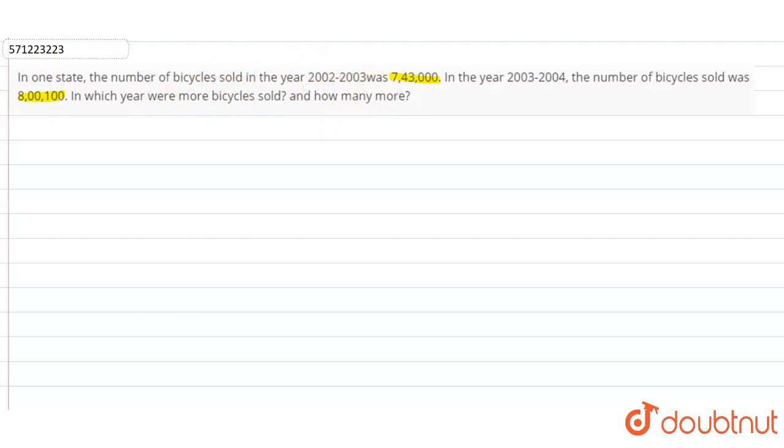So firstly, number of bicycles sold in 2002-03 equals 7,43,000 and number of bicycles sold in 2003-04 is 8,00,100.